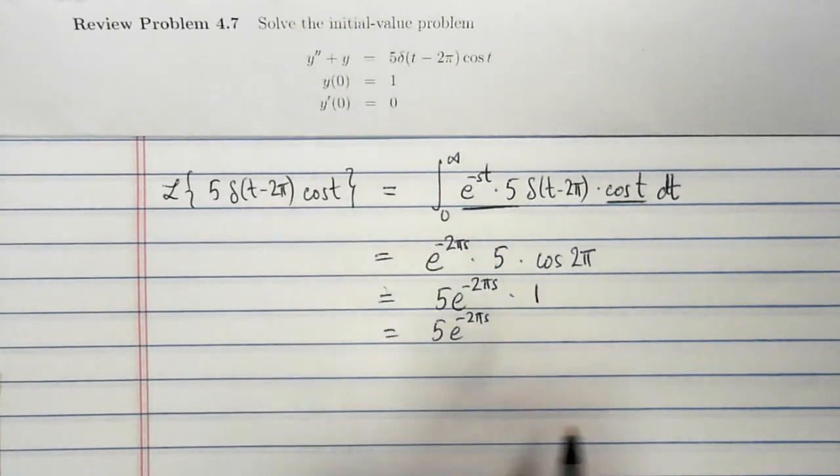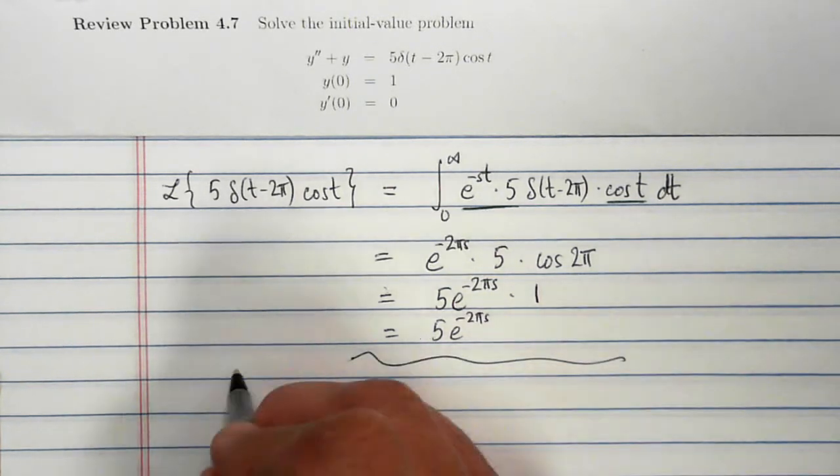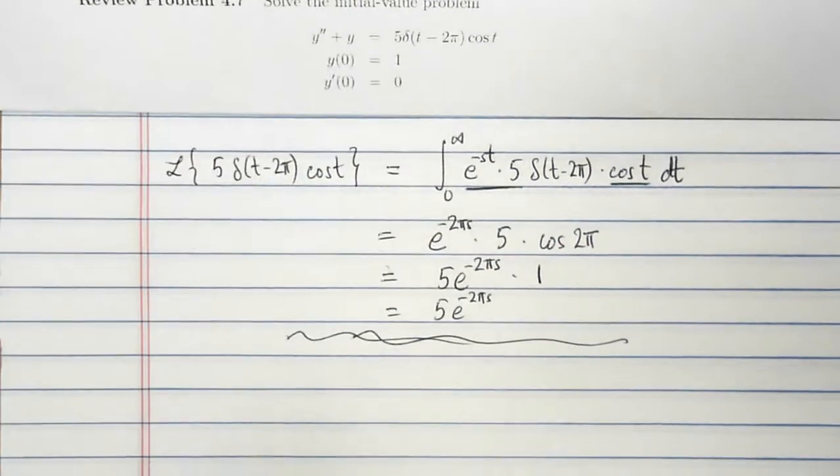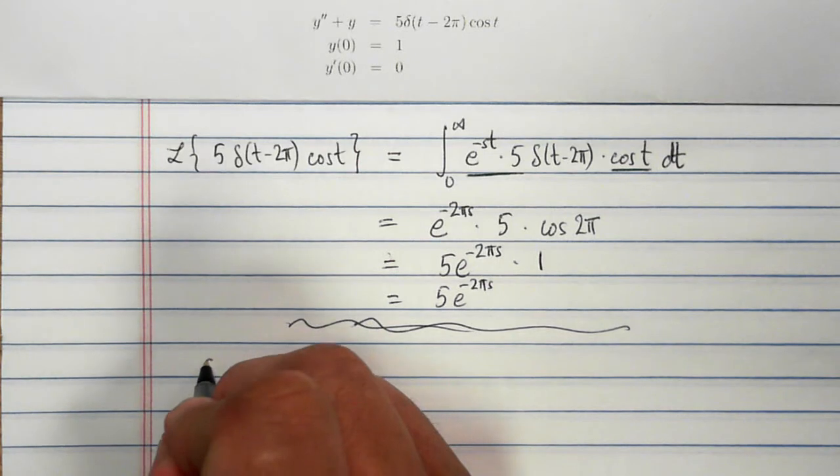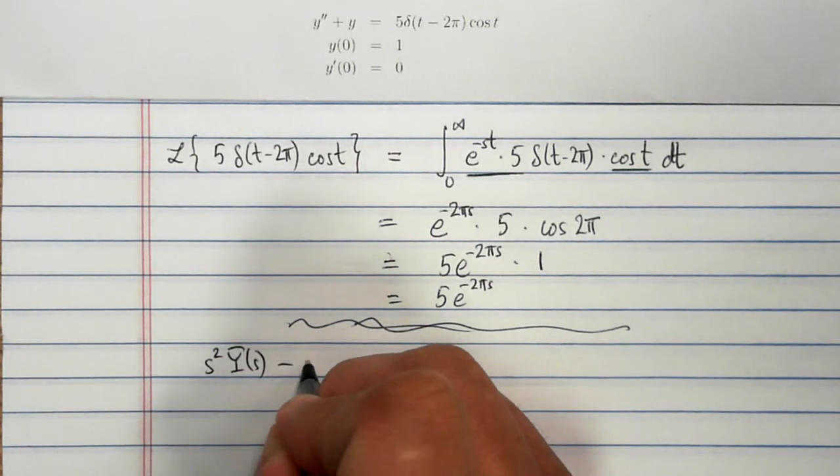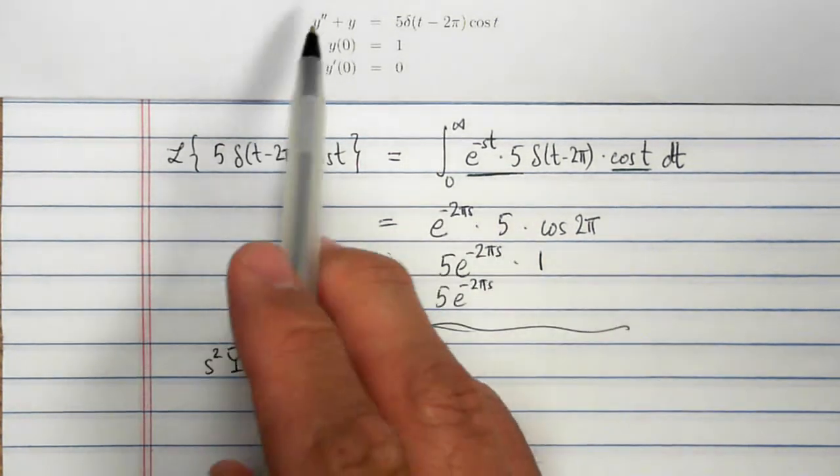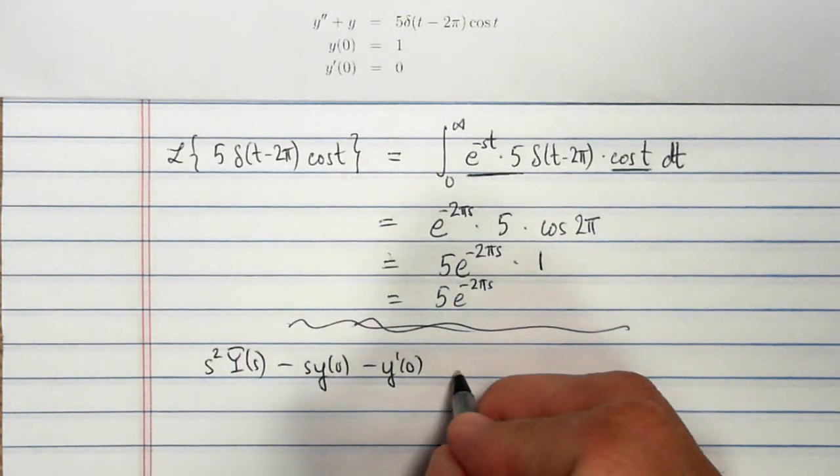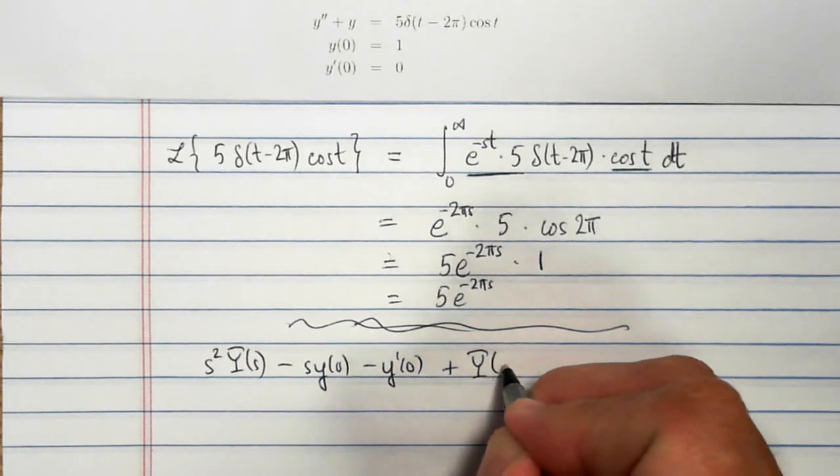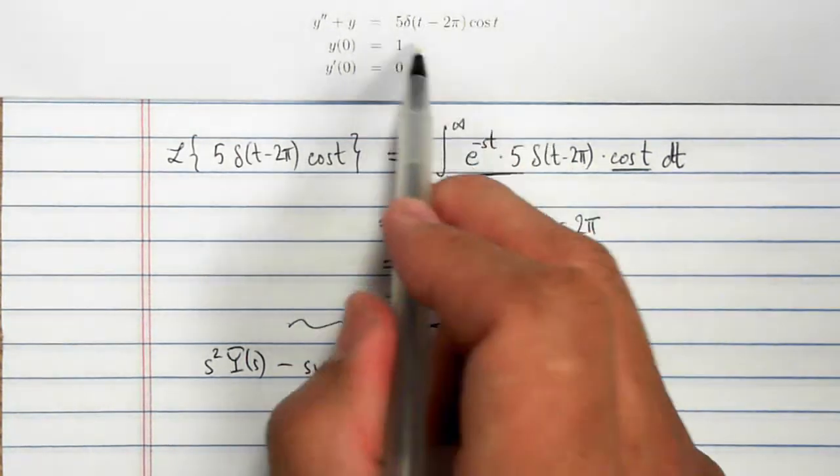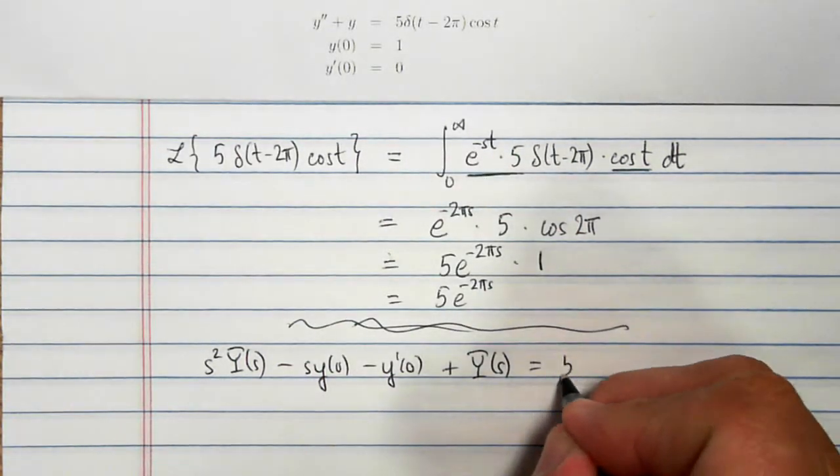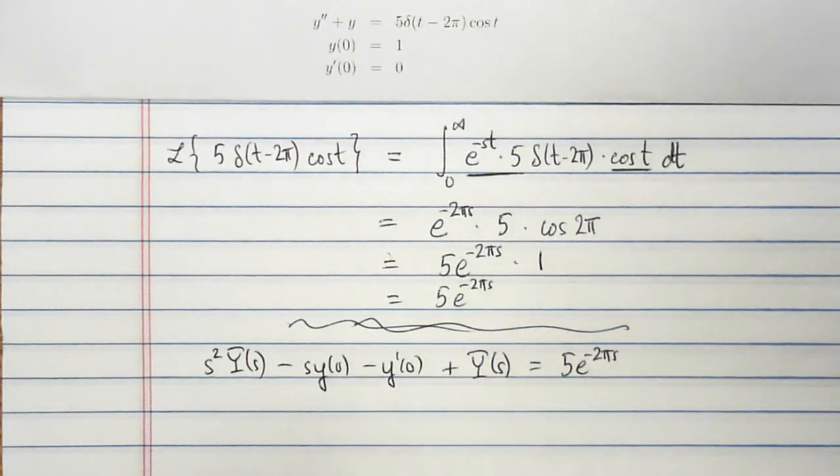Now using this, we can solve the initial value problem. So with that as prelude, let's come back to the initial value problem. We have s squared y of s minus sy of 0 minus y prime of 0. That's the Laplace transform of y double prime. Plus the Laplace transform of y equals the Laplace transform of the right-hand side, which we just got done saying was 5 e to the minus 2 pi s.